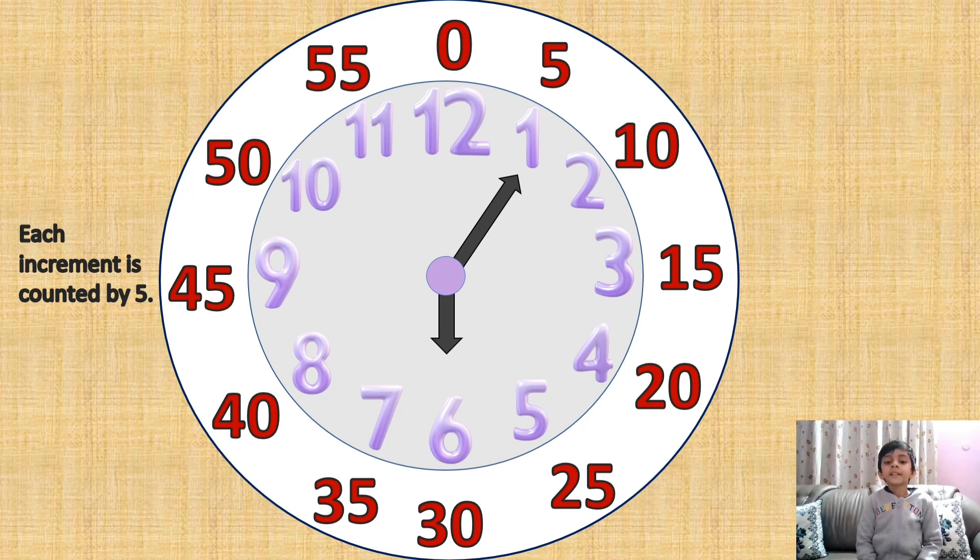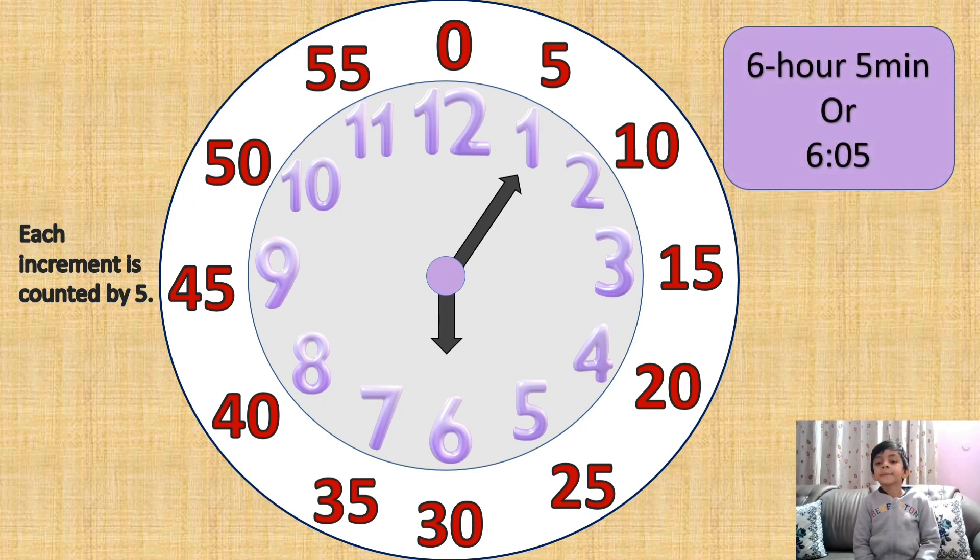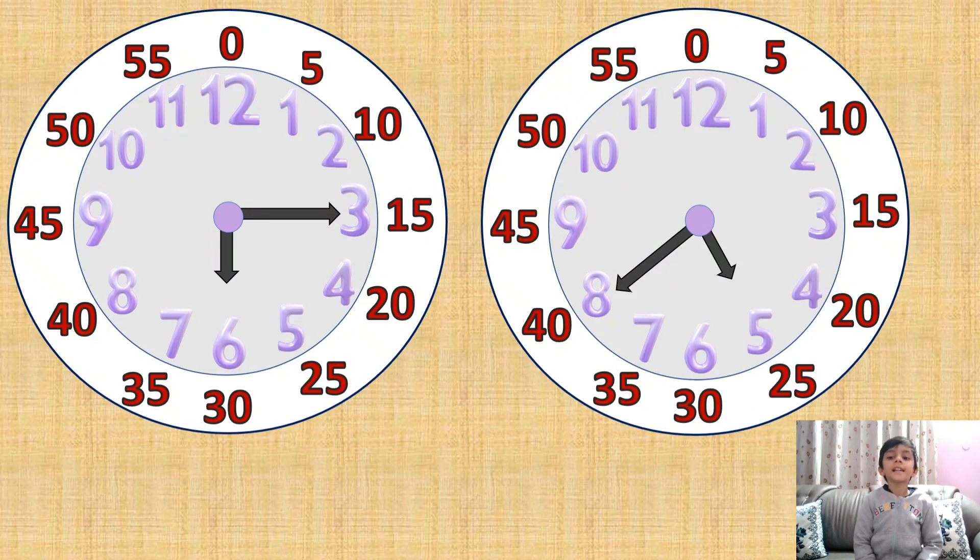So the time is 6 hour and 5 minutes, or 6:05. Friends, can you tell time in these 2 clocks? In the first one, the hour hand is pointing to 6 and the minute hand is pointing to 3, so 6:15 is the time.